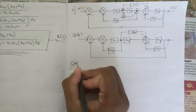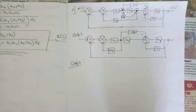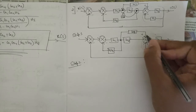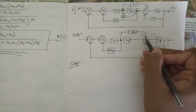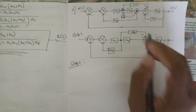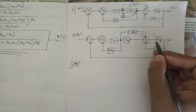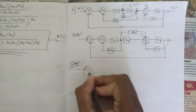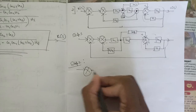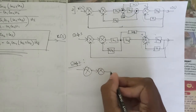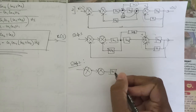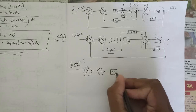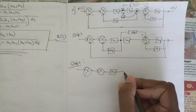We can reduce this minor loop, but will the summing point go? The summing point won't go, because there is one more path joining this summing point when we reduce it. So the summing point stays, but we can reduce these two blocks. Reducing it: we get g1 in that block, and now g2 and g3 are in series so we can write them together.